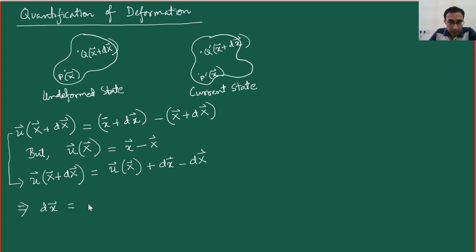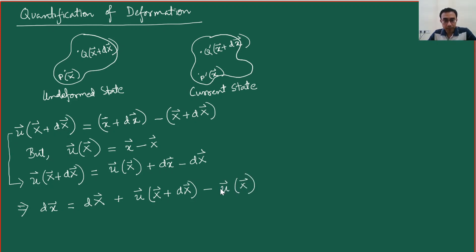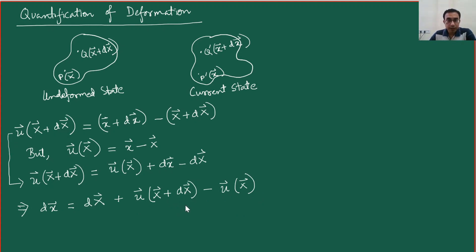From here we can write the key statement: d(small x) equals d(capital X) plus the displacement vector of point Q minus the displacement vector of point P. As far as the quantification of deformation is concerned, this is the statement we wanted to arrive at. However, it is not in a convenient form, so we would like to carry out some mathematical manipulations over this difference between the two displacement vectors and simplify it to a more convenient and physically interpretable form. That will be done in the next part of the lecture. Thank you.